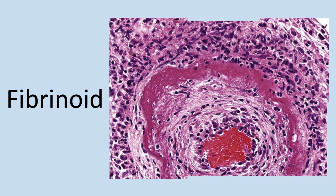And then lastly, fibrinoid necrosis. This is usually seen in immune reactions and involves blood vessels predominantly. Complexes of antigens and antibodies combine and deposit within the arterial walls themselves. Deposits of these complexes along with fibrin leaking out of the vessels creates a unique bright pink appearance on histology, which is referred to as fibrinoid necrosis.